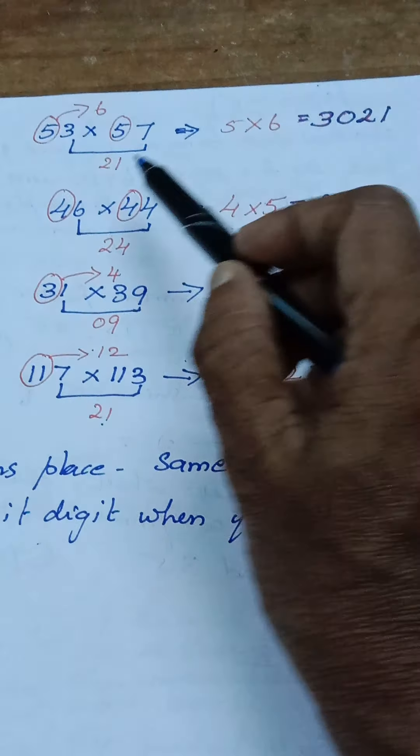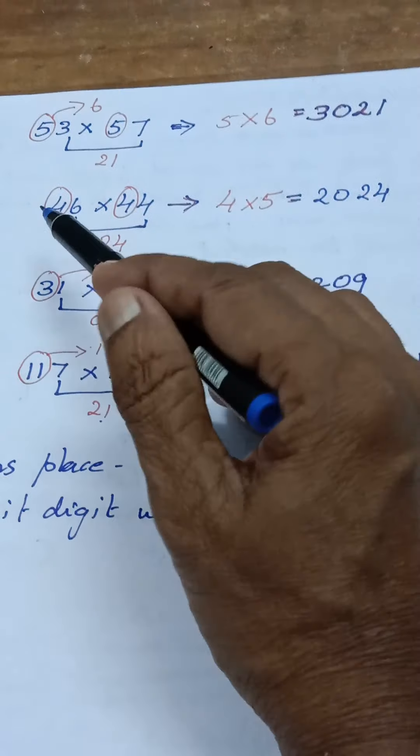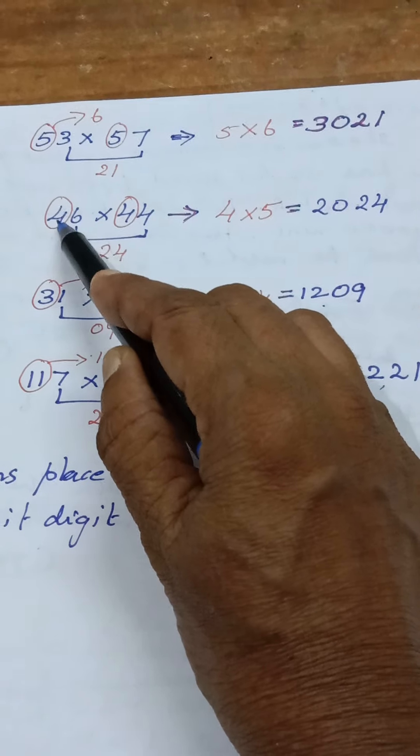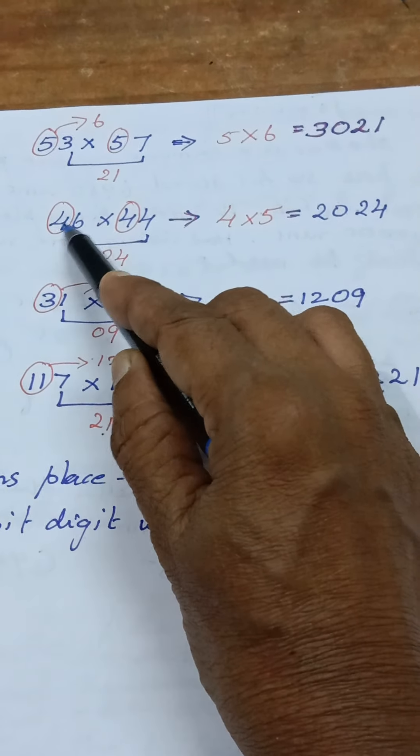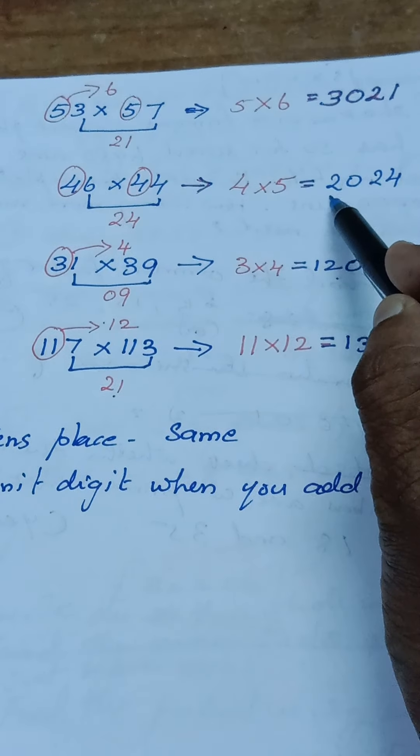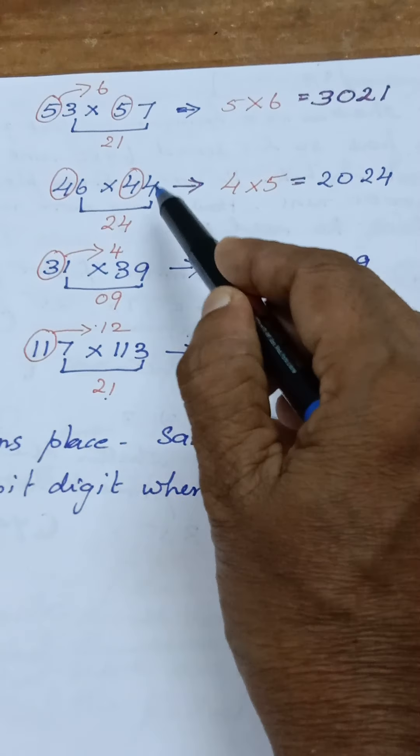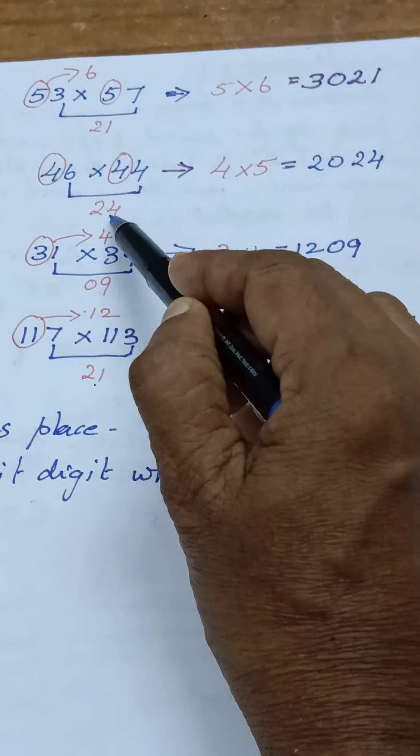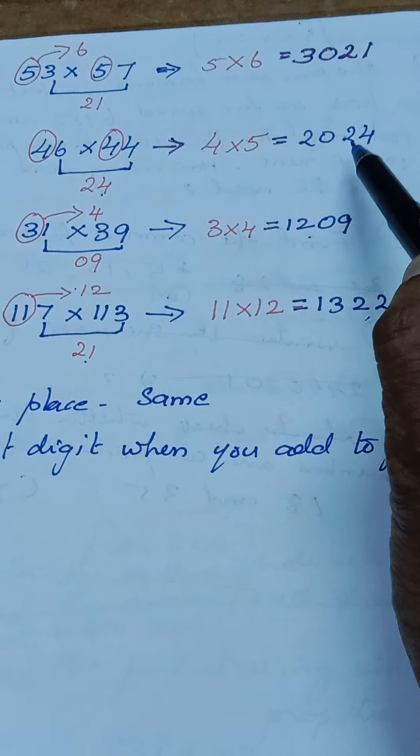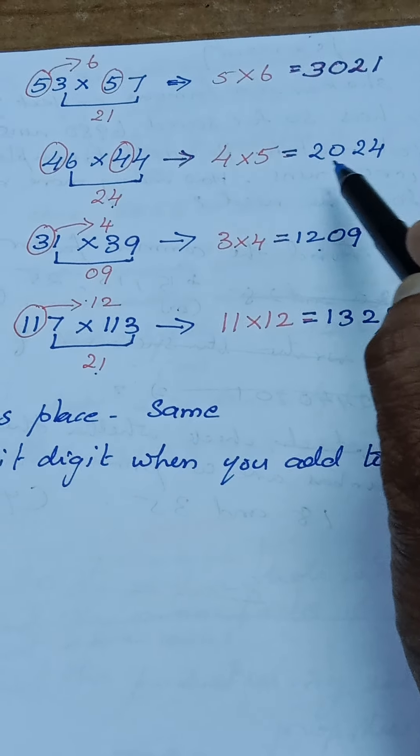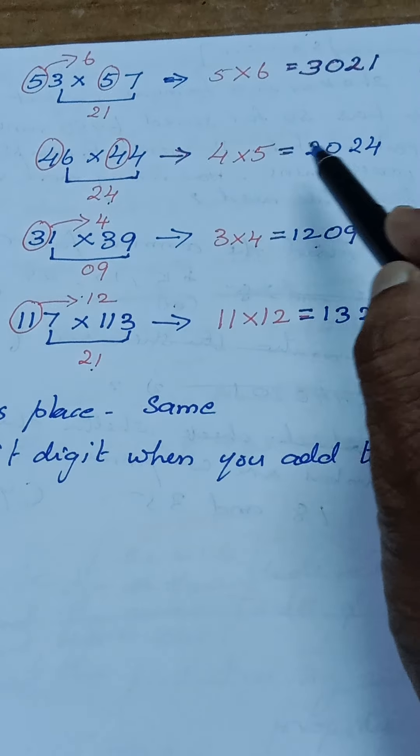Now let us see second example. The tens place is 4, so what should I multiply? 4 into 5 is 20, so this is my answer part first one. Next is unit digit - I'm going to multiply the unit digit: 6 into 4 is 24. So this 24 is my second part. So my answer is 2024.